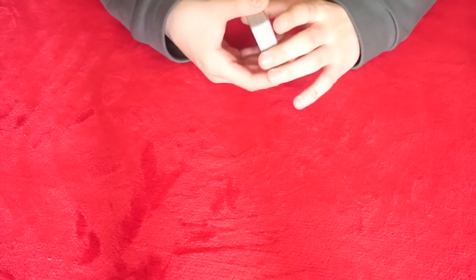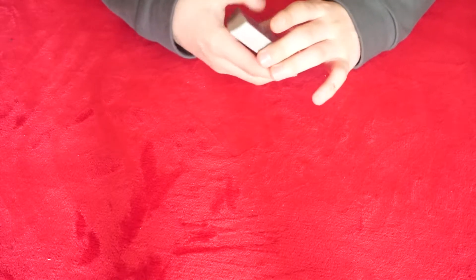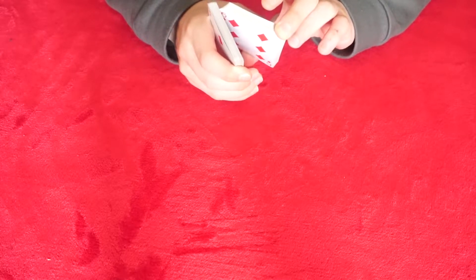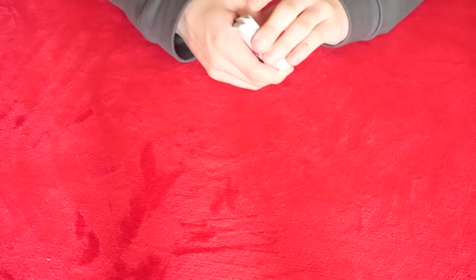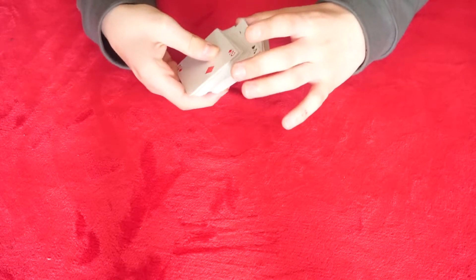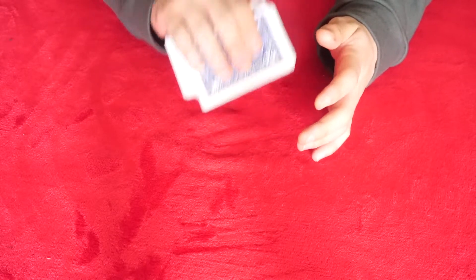Alright, so this is pretty much how you guys can do it. Pretty much what you do is they say stop whenever they want, and you say then have a look at it. And then when you do that, you catch a break under the card. You then do this, and at this point you can look at the card. And it's a Six of Diamonds.